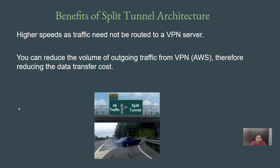The second important benefit from a corporate perspective is that you can reduce the volume of outgoing traffic from the VPN, therefore reducing data transfer costs. Cloud providers charge for data transfer. If traffic from all clients in the organization goes through the VPN to the internet and back, the VPN acts as a middleman — it can slow things down and increase data transfer costs, which is not something organizations want. This is why split tunneling is a very important part to implement whenever you're setting up a VPN for your organization.